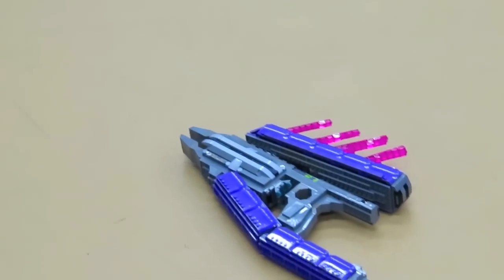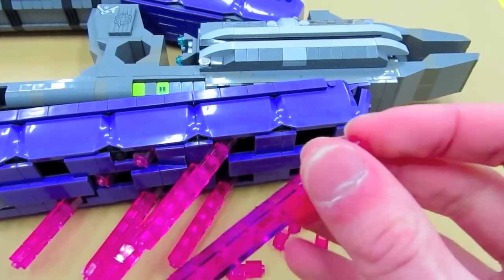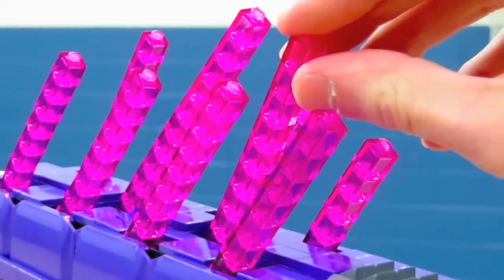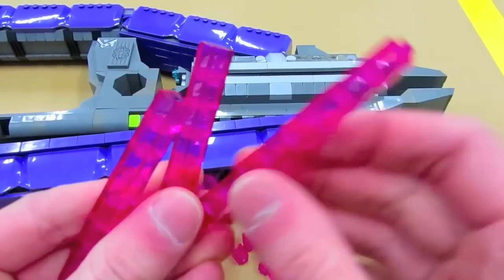This is the Covenant's Type 33 Guided Munitions Launcher Real Life Replica and this model was built with around the 500 Lego brick mark, with the crystal pink needles taking over 100 bricks alone.